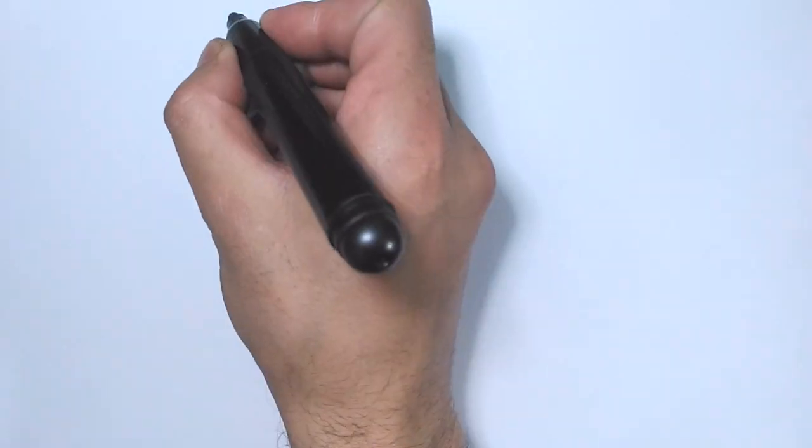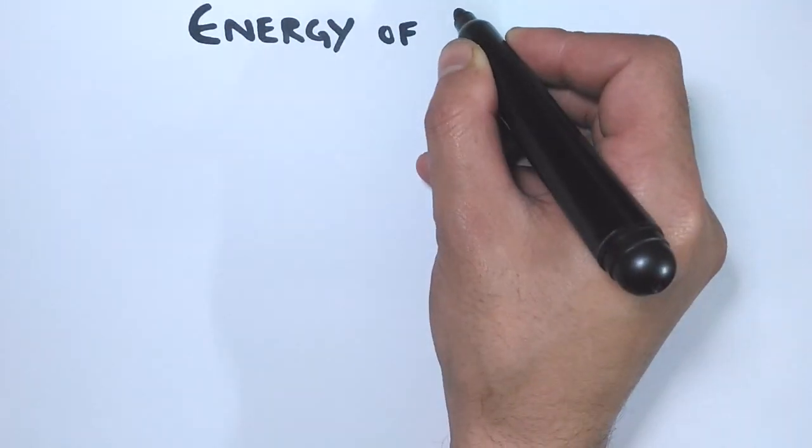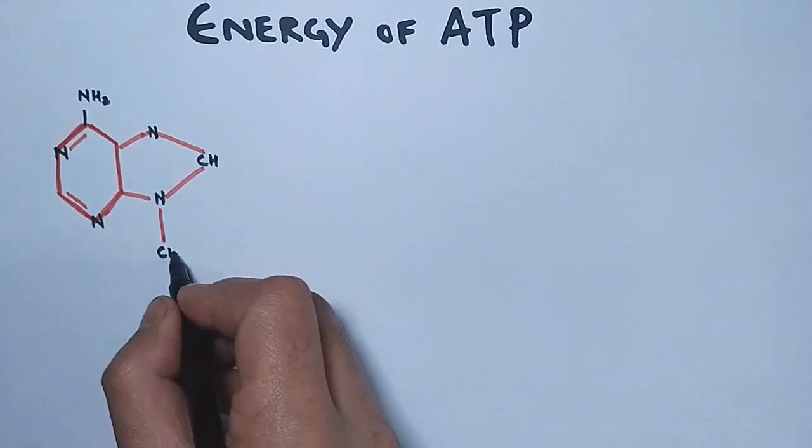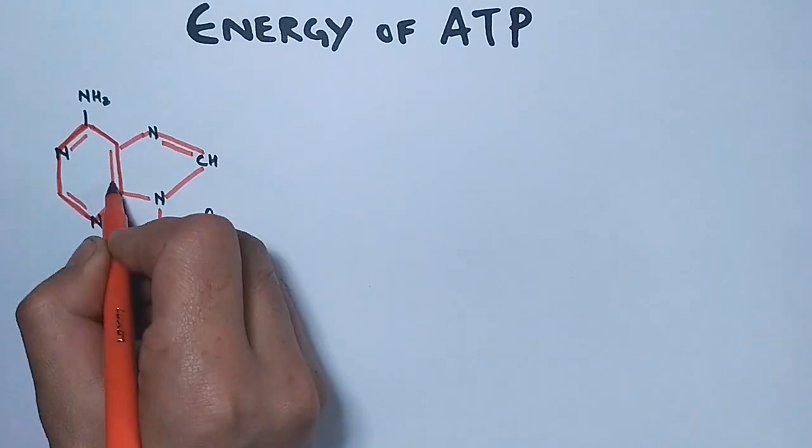Now let's see why the ATP molecule releases energy and how it releases energy in the biochemical reactions. First of all, keep this thing in mind: it's not the whole ATP molecule which gives off the energy, but it's actually the bonds that release the energy.